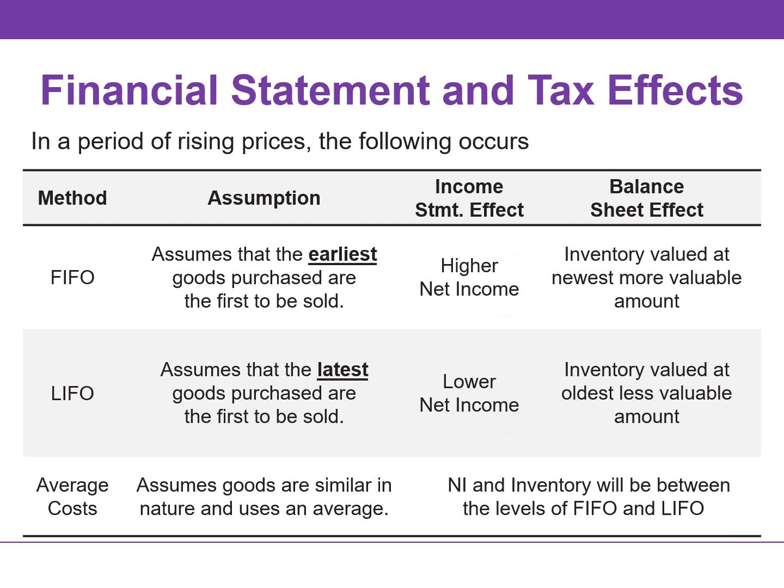Lastly, let's briefly discuss the balance sheet effects. Under the FIFO method, the cost allocated to ending inventory will approximate their current cost. Whereas under the LIFO method, the cost allocated to ending inventory may be significantly understated because inventory is valued at the oldest amount.